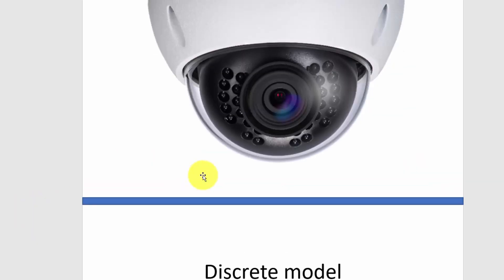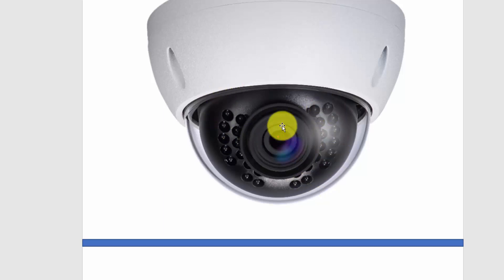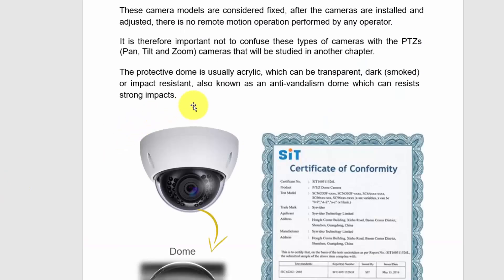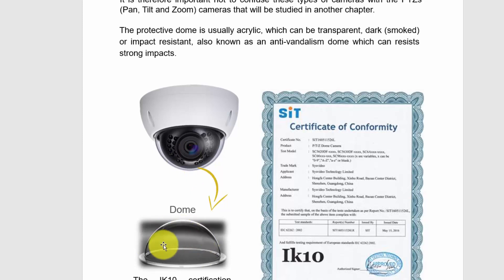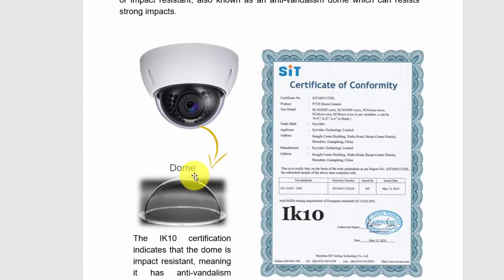On a real dome, here's the acrylic — you can remove it to access the camera and adjust the lens position. You can also have infrared LEDs around the lens. Some dome cameras have an IK10-rated acrylic, meaning it's certified anti-vandalism — you can hit the camera and it won't break because it's protected against impact. The same protection is available for bullet cameras with IK10 certification.